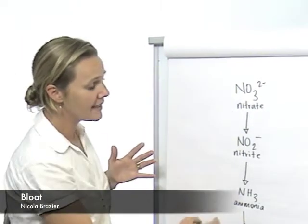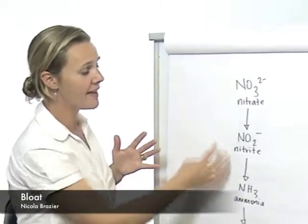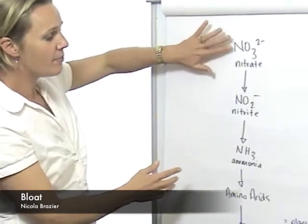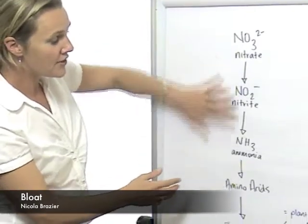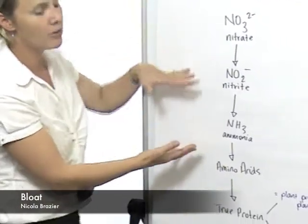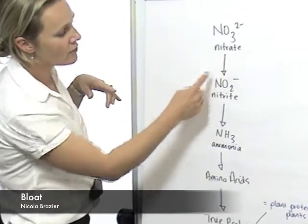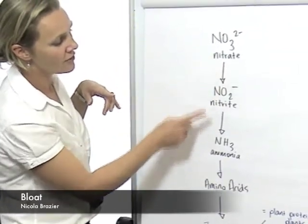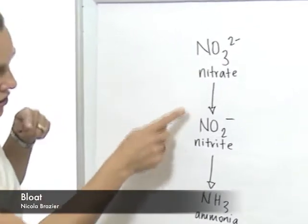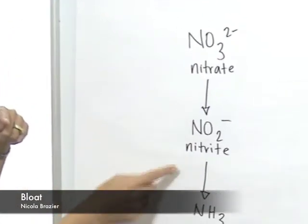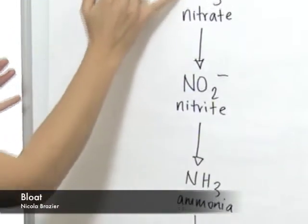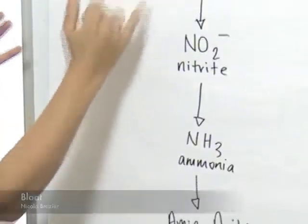The reason these factors are so important is that for this conversion process to happen, it relies on firstly a number of enzymes, but it also relies on high levels of starch and sugars to carry out what they call nitrate reduction, which is basically the removal of oxygen.